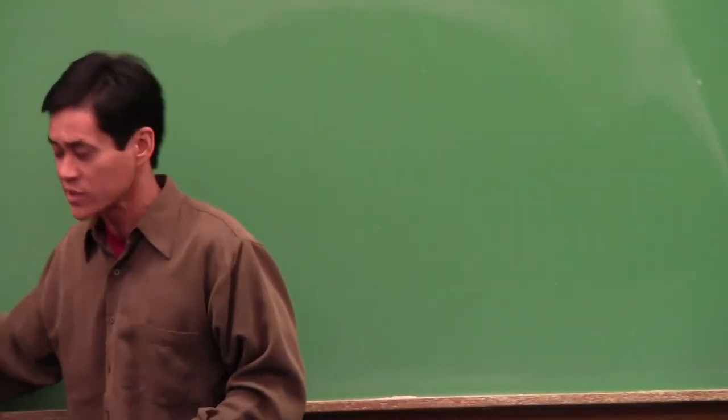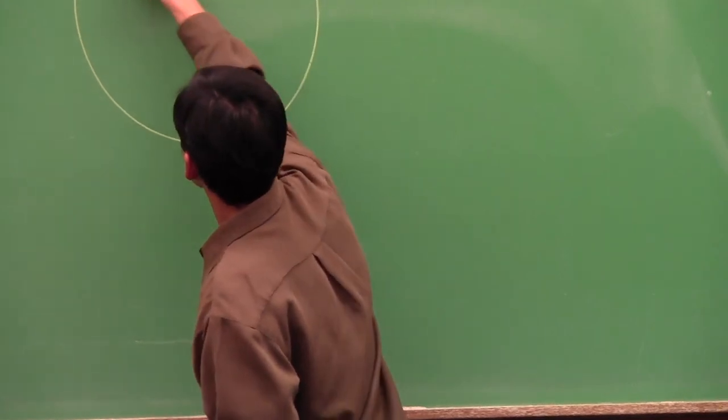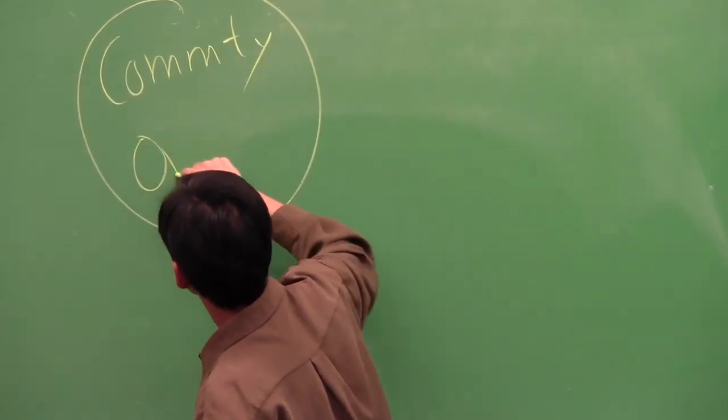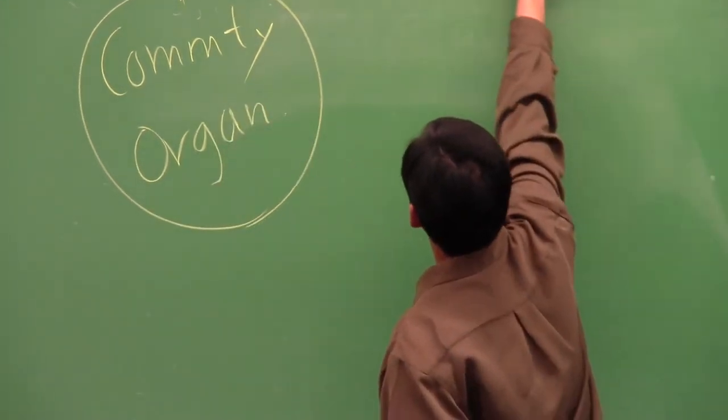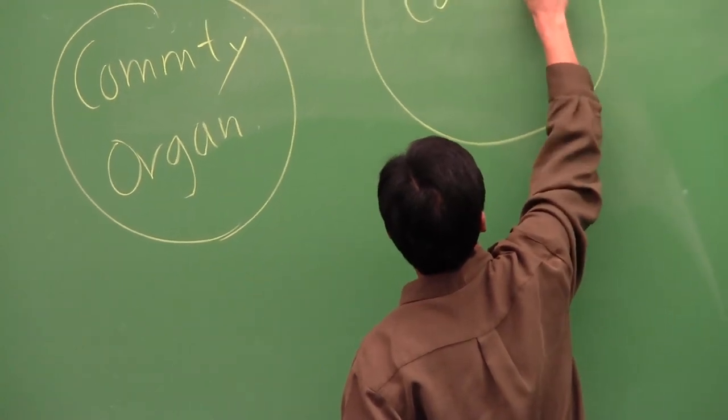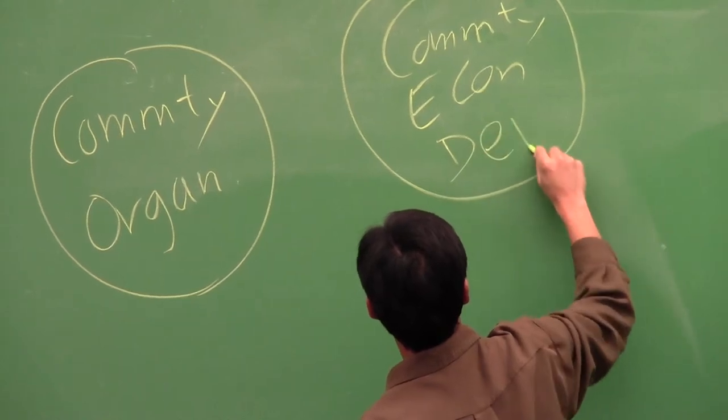And I'm going to draw, just inspired by the circle stuff, but I'm going to draw a few things, just to show. So I'm just going to say there's a community organizing sphere. There's a community economic development sphere.